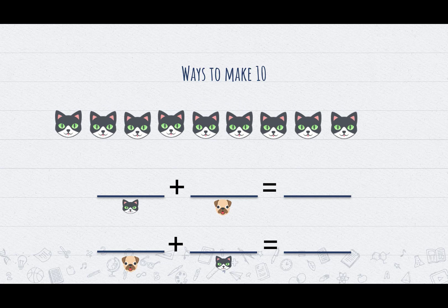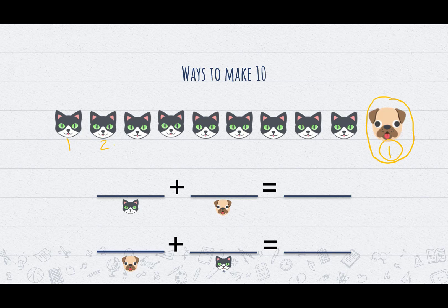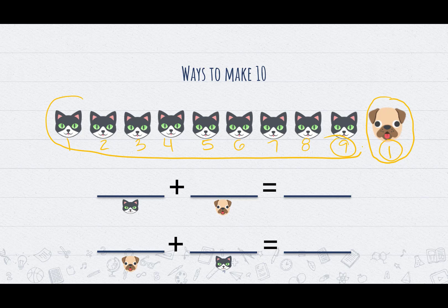Let's see a different way to make 10. We have our cats and our dogs. Counting my dogs, I have 1 dog — I'm going to circle my group. Now I'm going to count how many cats I have: 1, 2, 3, 4, 5, 6, 7, 8, 9 cats. I'm going to circle my group of cats. Now I have both of my groups circled.